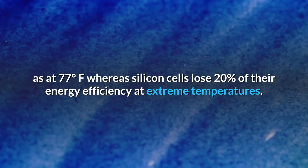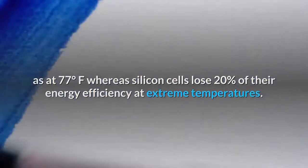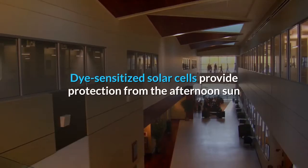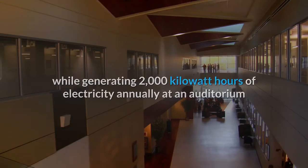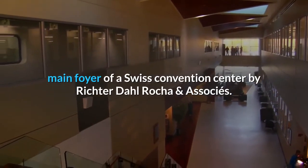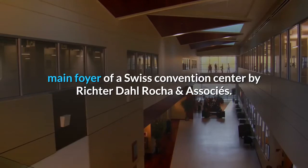Dye sensitized solar cells provide protection from the afternoon sun while generating 2000 kilowatt hours of electricity annually at an auditorium main foyer of a Swiss convention center by Richter Dal Rocha and Associates.